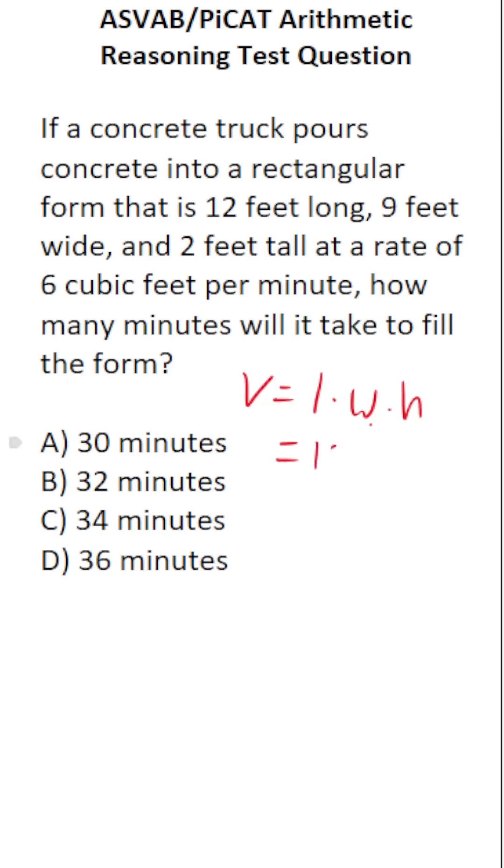We know our length is 12 according to the problem. It's 9 feet wide and 2 feet tall. 12 times 9 is 108 times 2. And if you can't do 12 times 9 using your times tables, you could always do it off to the side. 9 times 2 is 18, carry a 1. 9 times 1 is 9, plus 1 is 10.